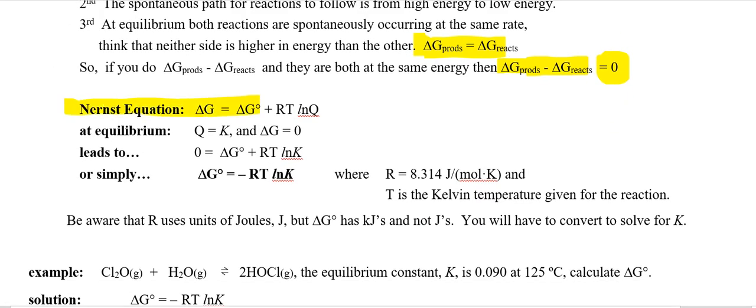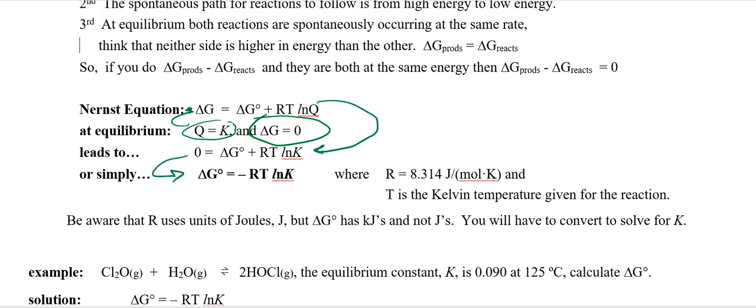So here we go back to the Nernst equation so we can apply all this. All righty. In the Nernst equation, at equilibrium, Q is going to be K and Delta G is going to be zero. So we can plug that information into the Nernst equation and then rearrange with little algebra 1 and we get Delta G naught equals negative RT natural log K.